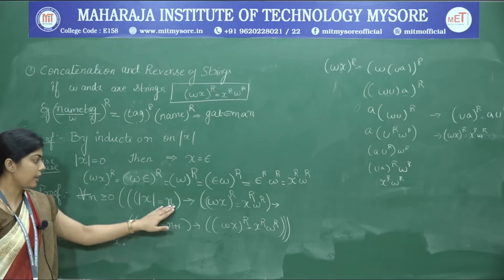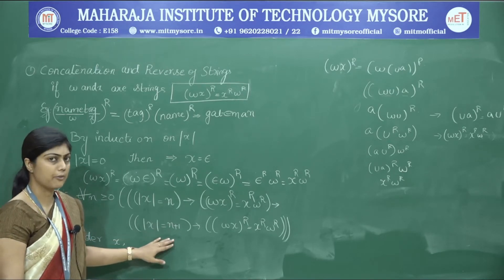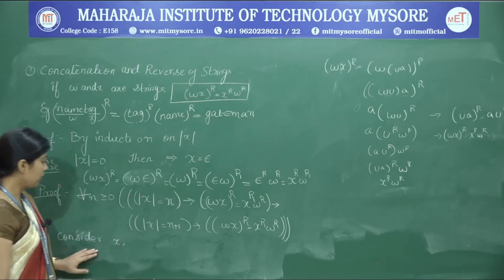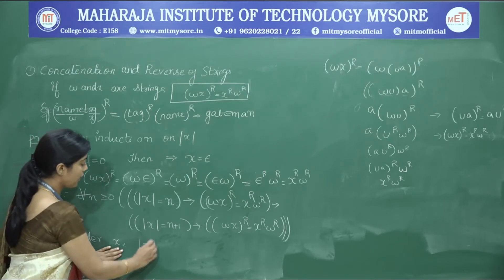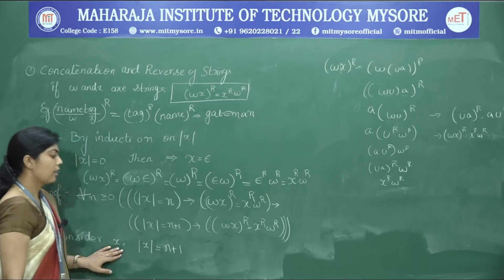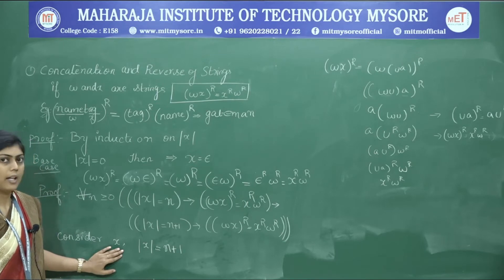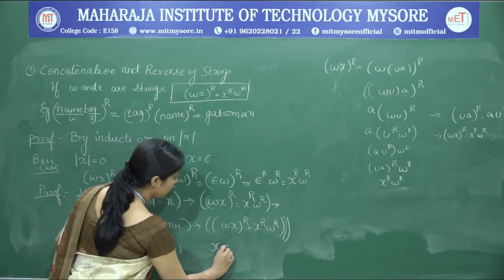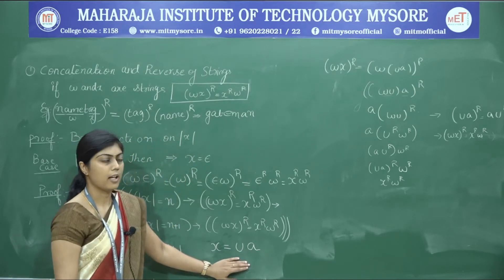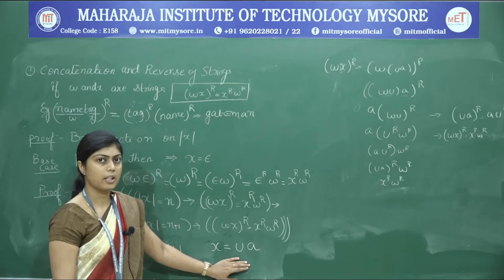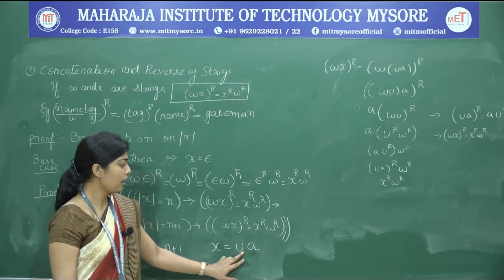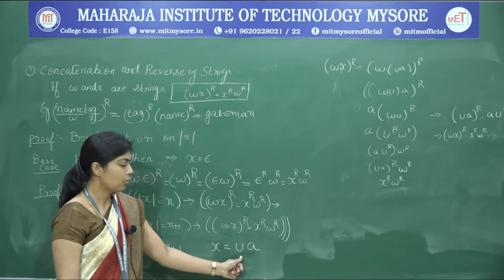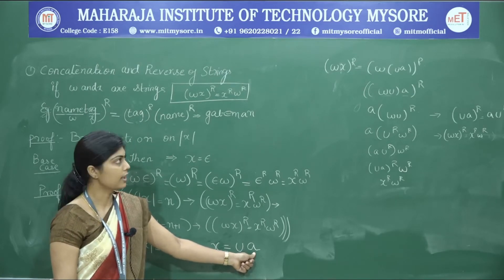For the inductive step, we consider any x whose length is n+1, so it has at least one character. The string x can be broken down into u and a, where a is the last character of the string and u is the rest of the string preceding it. So u belongs to Σ* and a belongs to Σ (a single symbol).